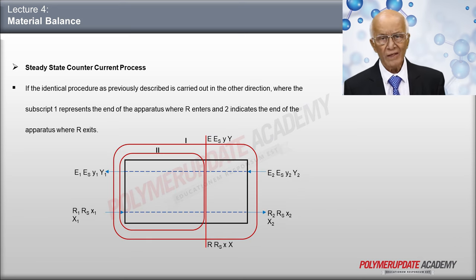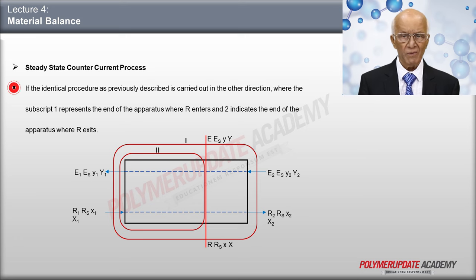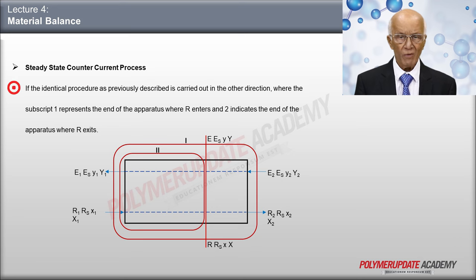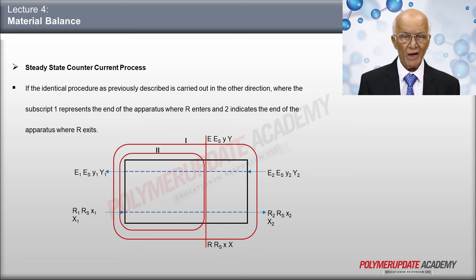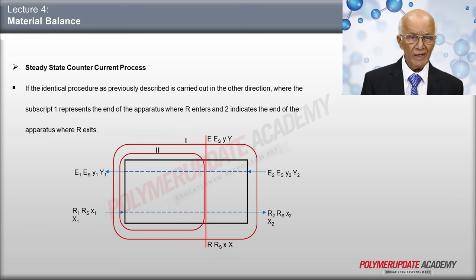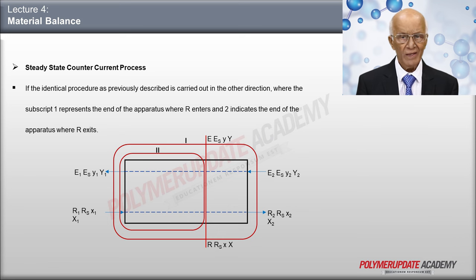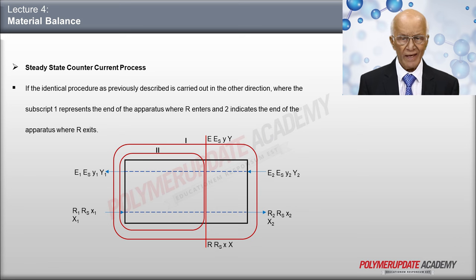Now, the steady-state counter-current process. If the same process as previously considered is carried out in a counter-current fashion, subscript 1 indicates the end of the apparatus where R enters, and subscript 2 indicates the end where R leaves. So, what is coming in is R1, RS, small x1, capital X1, and what is going out at the same end is E1, ES, Y1, and capital Y1. Similarly, at end 2, what is leaving is R2, RS, X2, and capital X2, and what is entering is E2, ES, Y2, and capital Y2.